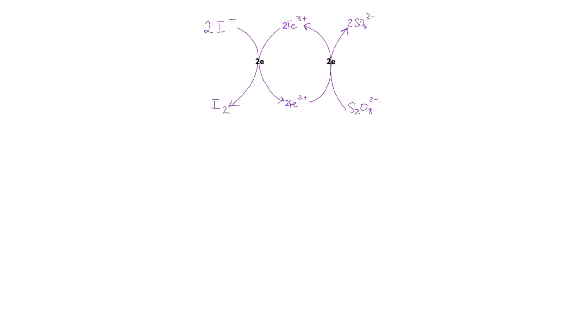So if we bring all the equations together now. The Fe3+ ions are gaining those 2 electrons from the 2 I- ions. That's going to form I2 and 2 Fe2+. And then the iron 2 plus is going to lose those 2 electrons and give them to the S2O82- ions and form the products. And obviously we form Fe3+.